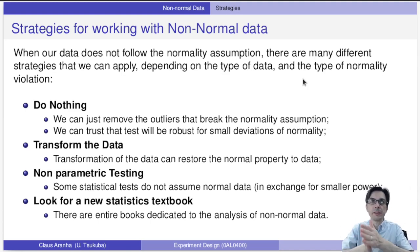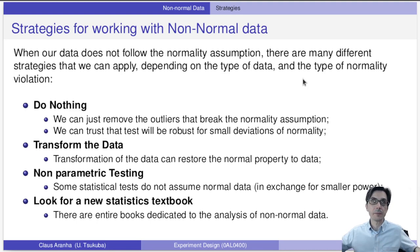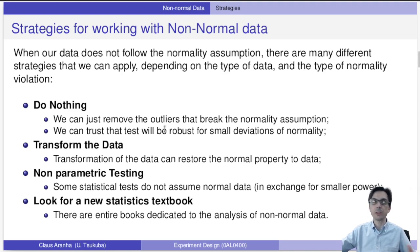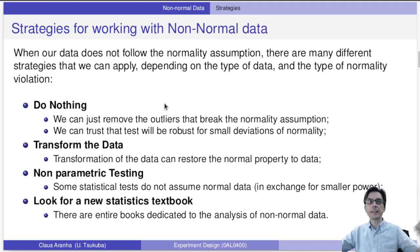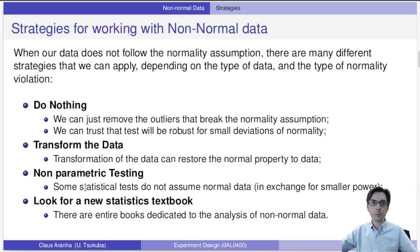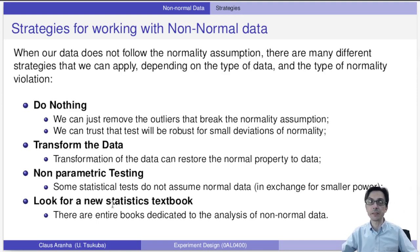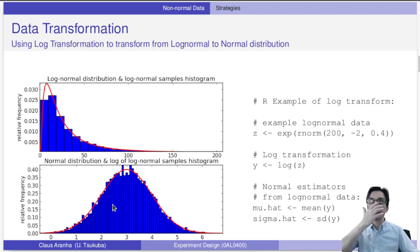When data does not follow the normality assumption, there are many strategies depending on the type of data and how much the assumption is violated. Sometimes we can do nothing — remove outliers, trust that the test is robust, or trust that the CLT will handle small violations, while carefully checking that results make sense. We can also transform the data, do non-parametric testing, or look for specialized non-parametric statistics references.